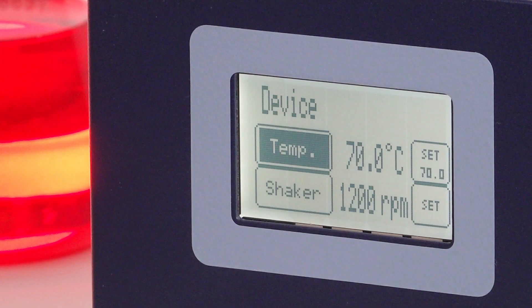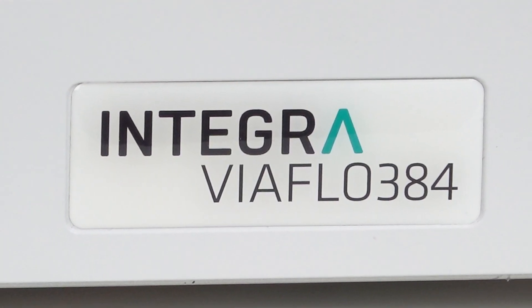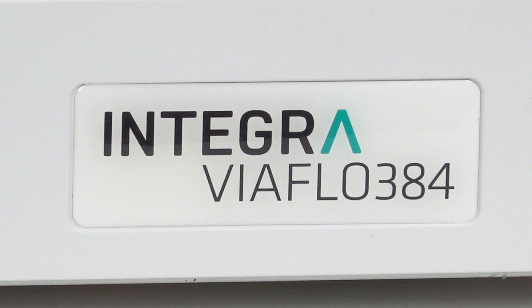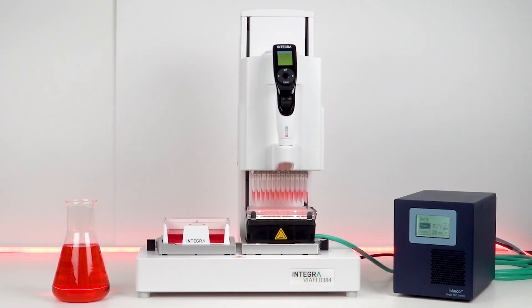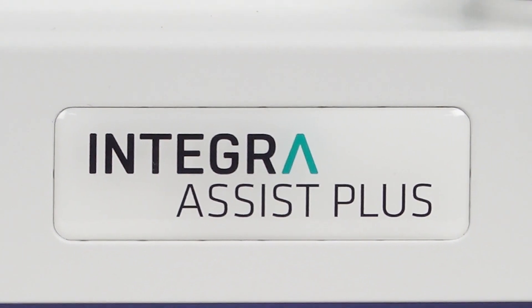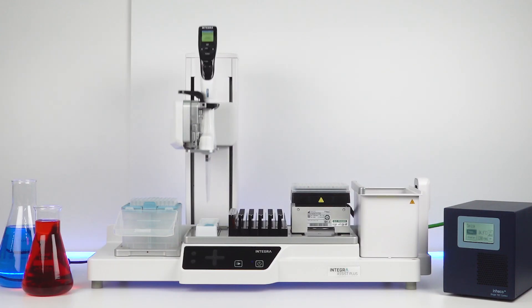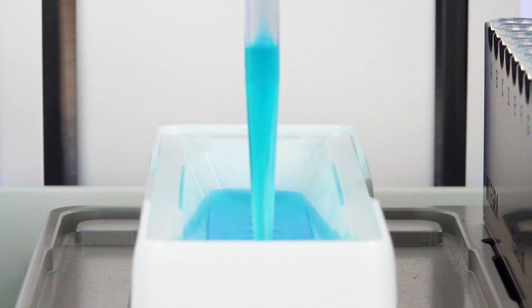These active heating and cooling blocks can be used with the ViaFlow 96 and 384 electronic pipette, as well as the Assist Plus pipetting robot. Both of these blocks can be used in either instrument.